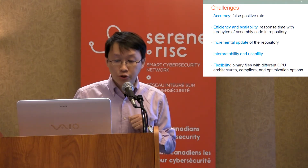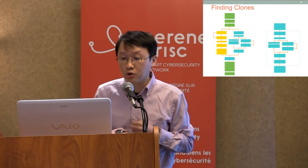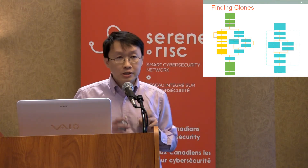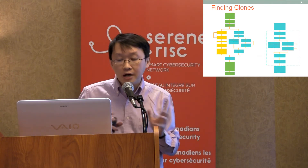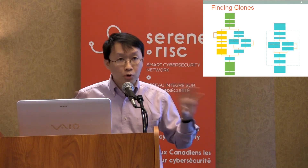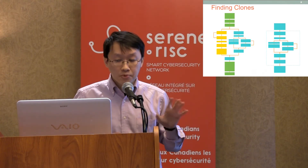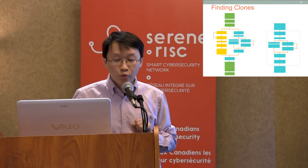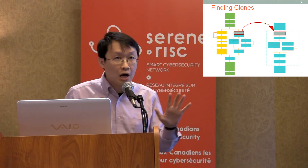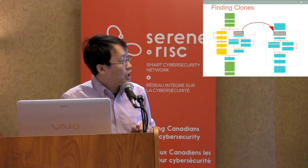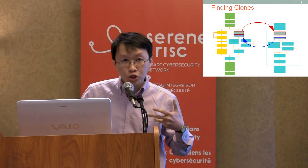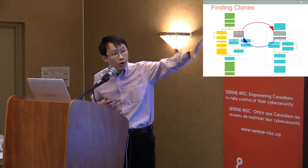How do we actually find the clones? We have two steps. The first step is to use hashing — we have a customized LSH hashing method to find clone pairs at the block level. By applying our customized LSH method, we may find that these two red blocks are the same or similar, allowing some kind of fuzzy matching. Then we find all the blue blocks that are the same.